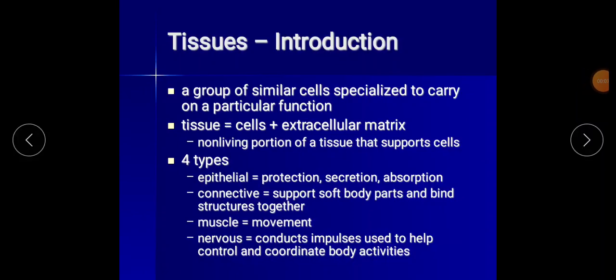Hi one and all. Welcome back again in another session of human anatomy and physiology. Today we will discuss another topic called tissues. Tissue is a group of similar cells specialized to carry on a particular function, available in all our body parts. Tissues are nothing but cells plus extracellular matrix — the non-living portion of tissue that supports cells.